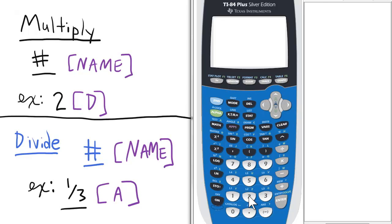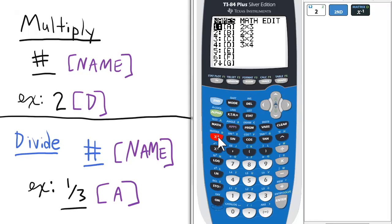So we just press 2, then we name the matrix, in this case D, so we select 4, and enter.